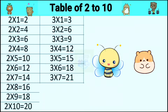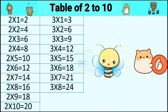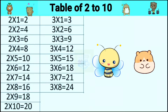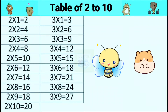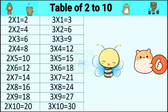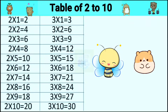3 sevens are 21, 3 eights are 24, 3 nines are 27, 3 tens are 30.